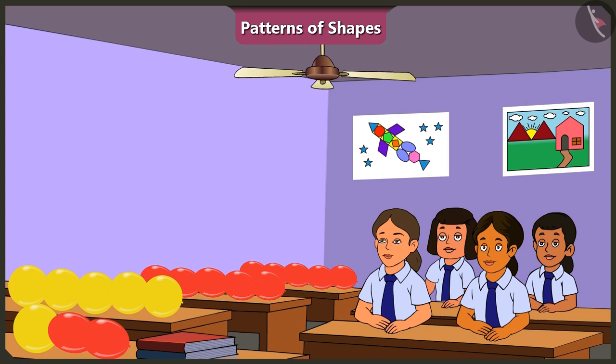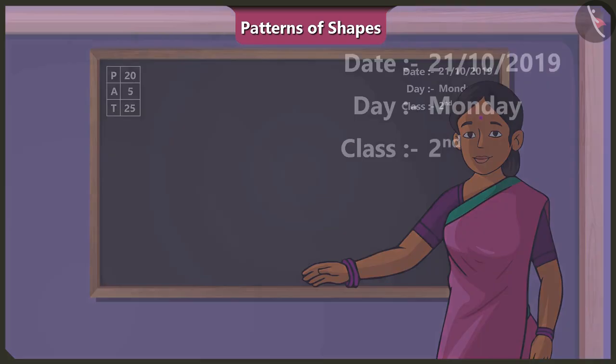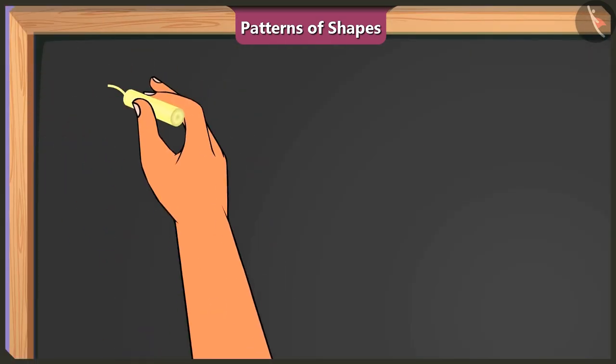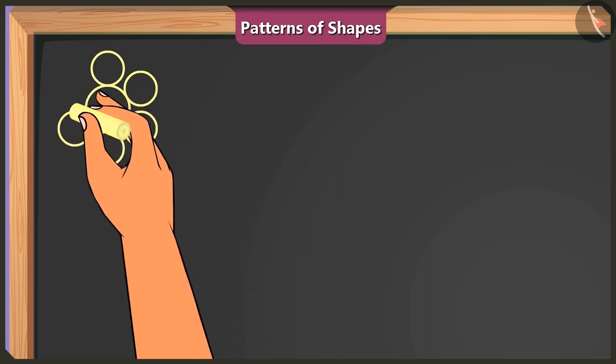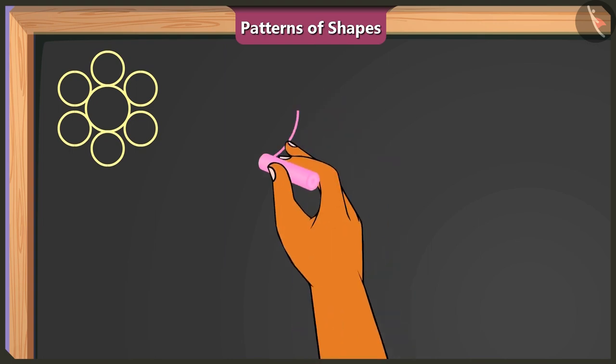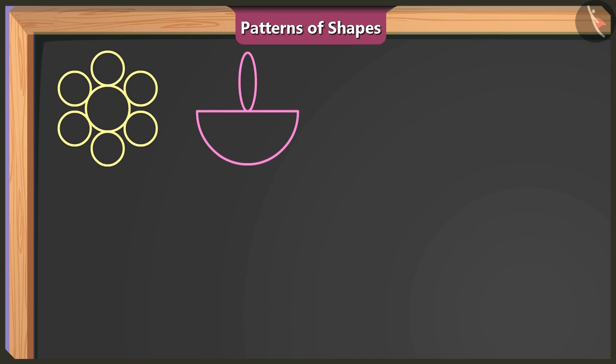Thank you, ma'am. What do we do next? We need to decorate this board. Okay, ma'am. On one corner of the board, we can use big and small circle shapes to make a flower. Next to this flower, I can draw a dhiya using a semi-circle and an oval shape in this manner.